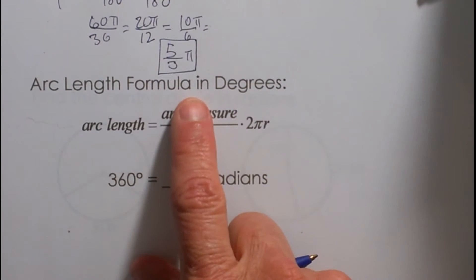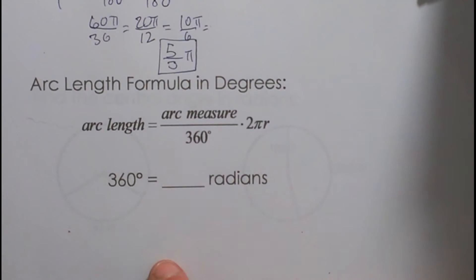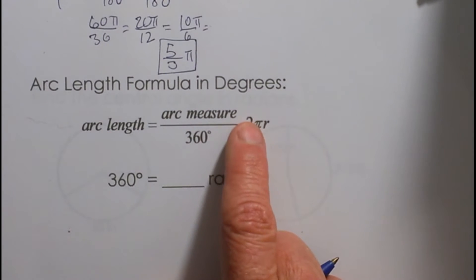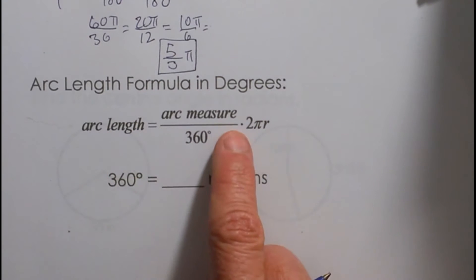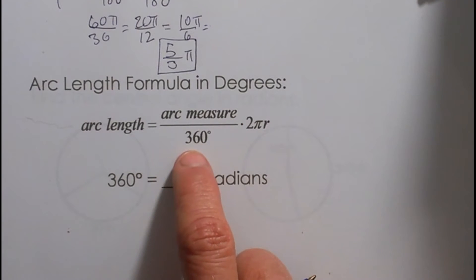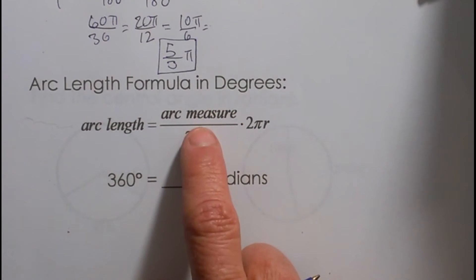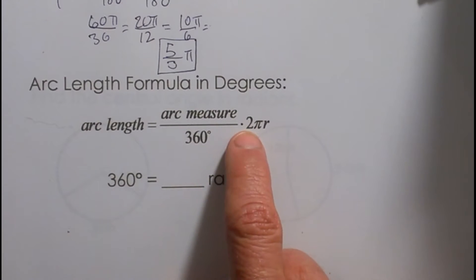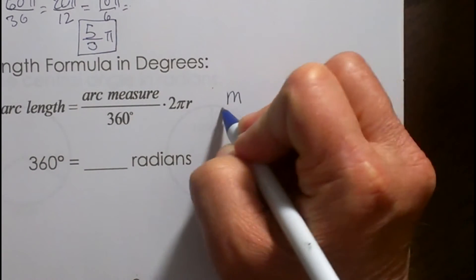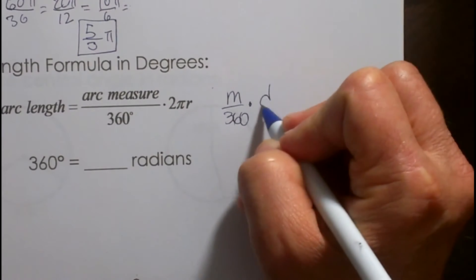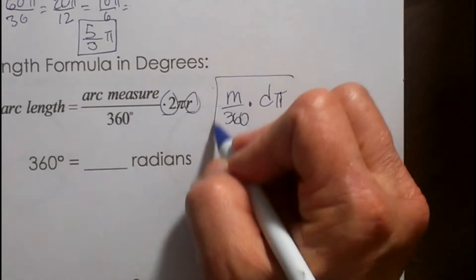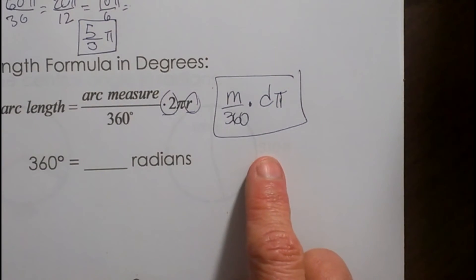Arc length formulas — there is one for degrees and we can use that. If you ever get confused in radians you can always switch back to degrees. The arc length formula is the arc measure of the central angle over 360 — the fraction of the circle — times 2 pi r. Another way to look at it: measure over 360 times d pi, because two times radius is a diameter. That gives you arc length.